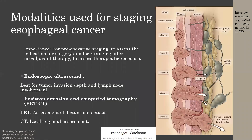Staging of esophageal cancer is important prior to surgery to assess whether surgery is appropriate for the patient's specific case, and also to assess therapeutic response after neoadjuvant therapy. Endoscopic ultrasound is best for tumor invasion depth and lymph node involvement, while PET-CT is important for distant metastasis and locoregional assessment. The different stages show the location of the tumor, lymph node involvement, locoregional spread, and distant metastasis.